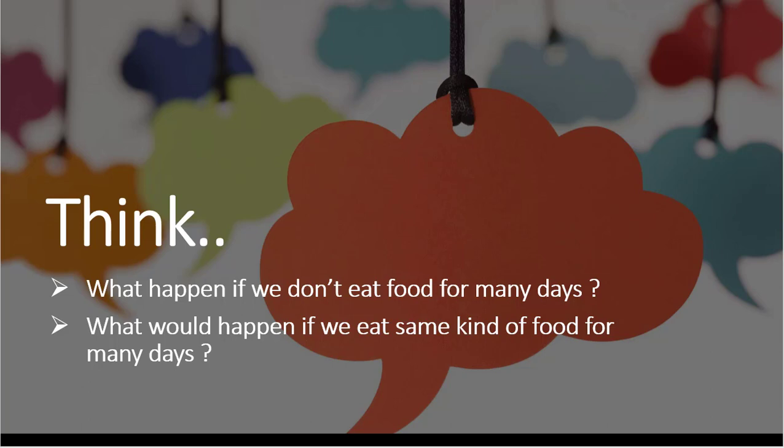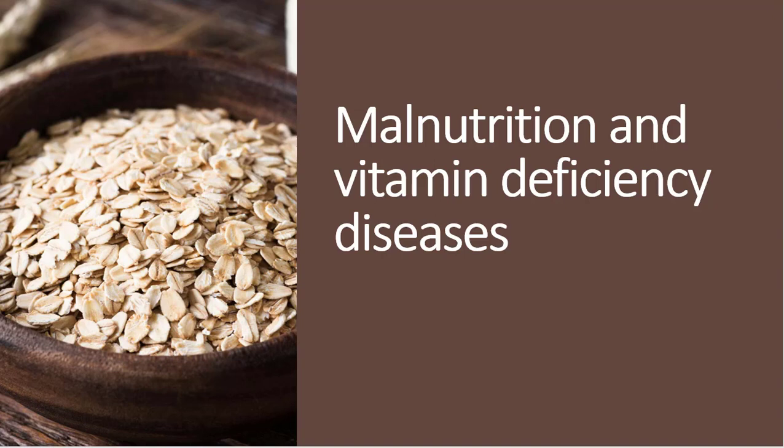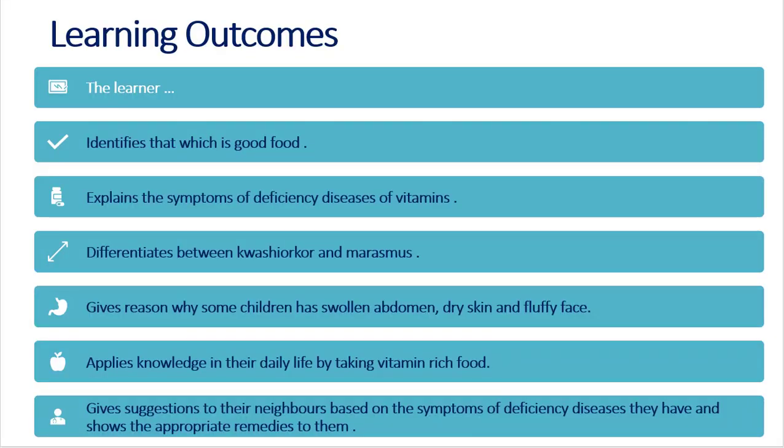Our topic is malnutrition and vitamin deficiency diseases. In this lesson the learner is going to learn to identify good food, explain the symptoms of deficiency diseases of vitamins, differentiate between Kwashiorkor and Marasmus, give reasons why some children have swollen abdomen, dry skin and fluffy face, and apply knowledge in daily life by taking vitamin-rich food and suggesting appropriate remedies.